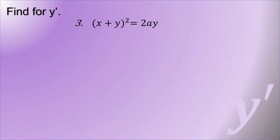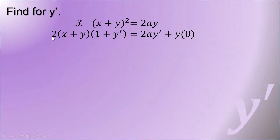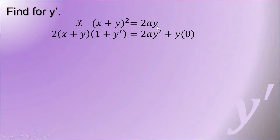Third example: the quantity x plus y squared equals 2ay. Differentiating the left side using the power rule gives 2 times the quantity x plus y, with the exponent reduced to 1, times the derivative of the quantity itself, where the derivative of x is 1 and the derivative of y is y prime. For the right side 2ay, using the multiplication rule: copy the first term 2a times y prime plus copy the second term y times the derivative of 2a, which is 0 since 2a is constant.